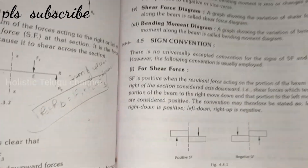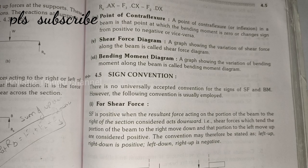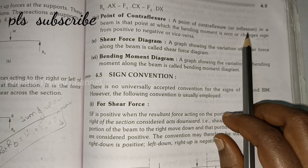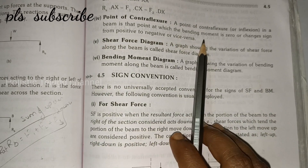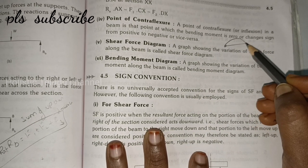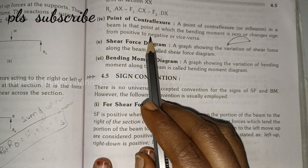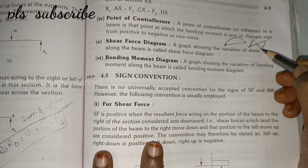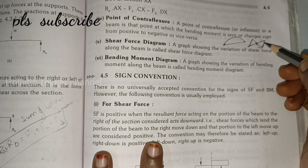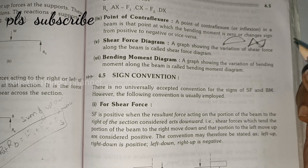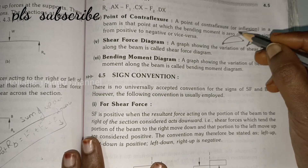The next important concept is the point of contra-flexure. What is the point of contra-flexure? It is the point at which the bending moment is zero. The bending moment changes sign from positive to negative or vice versa — either from positive to negative or from negative to positive. This point is called the point of contra-flexure, also known as the point of inflection.